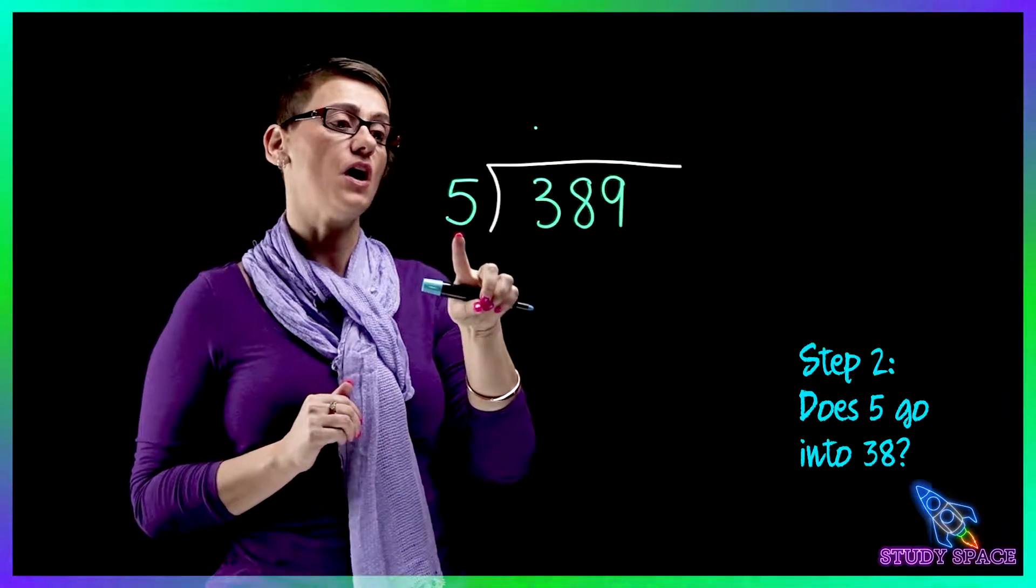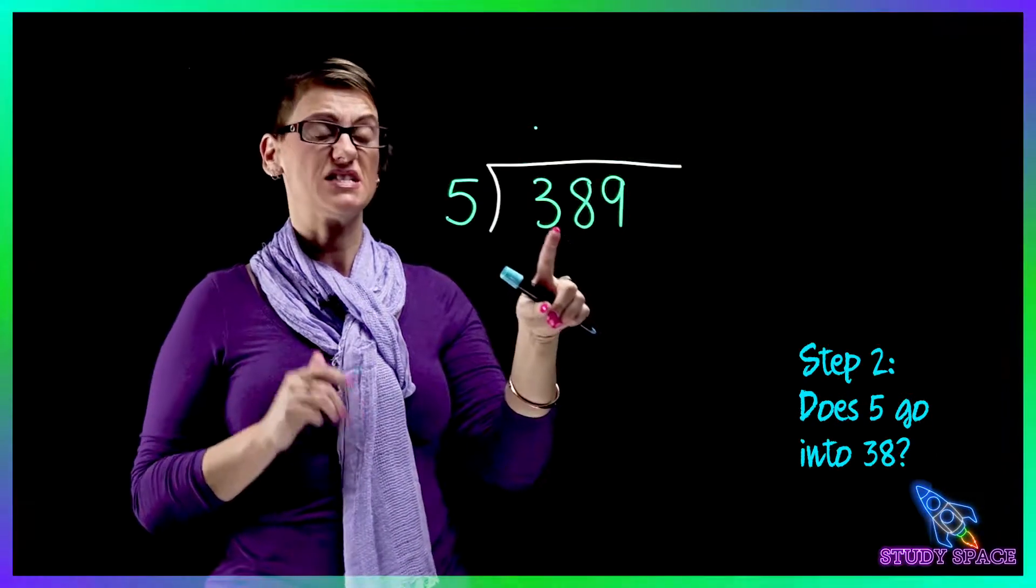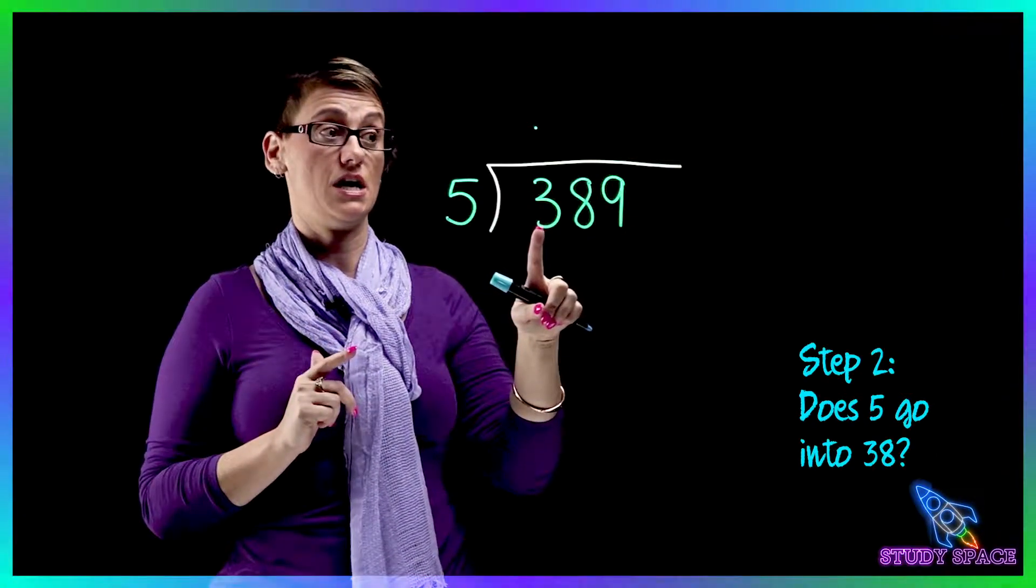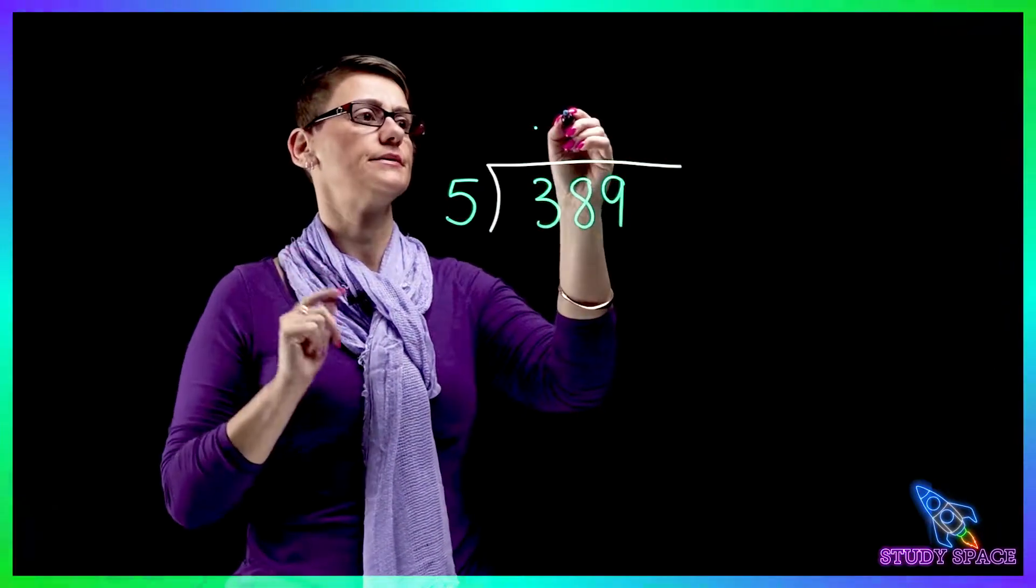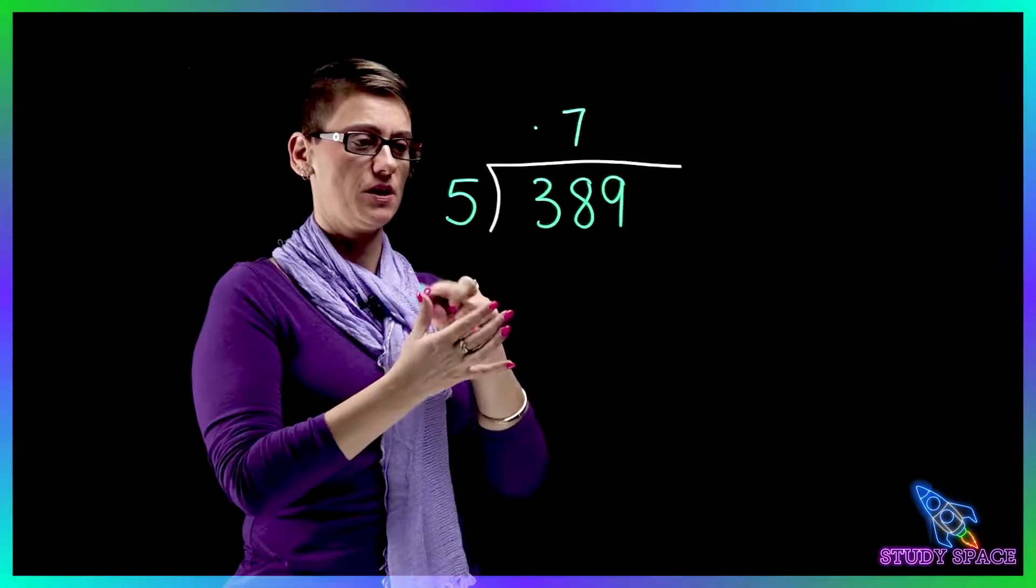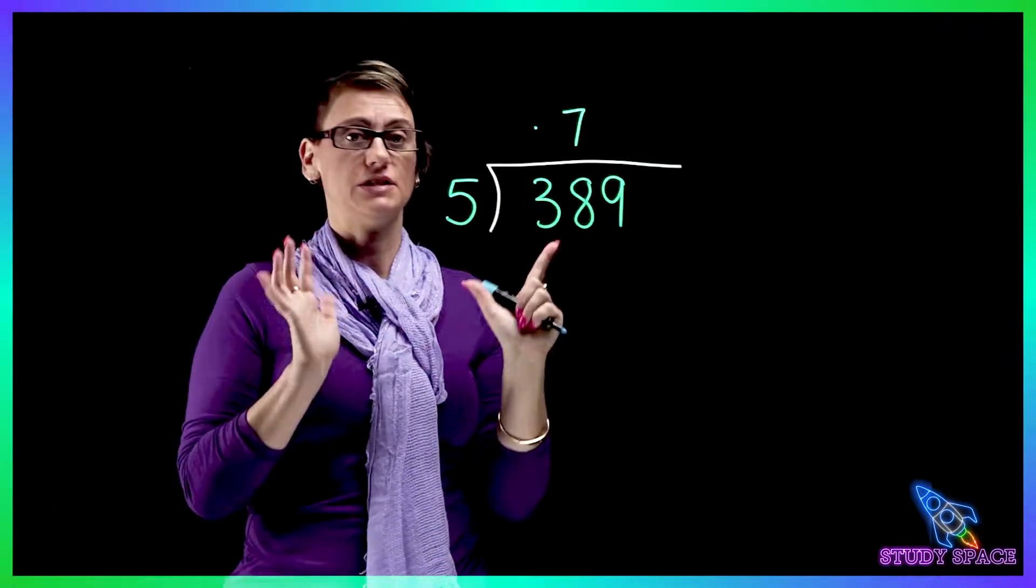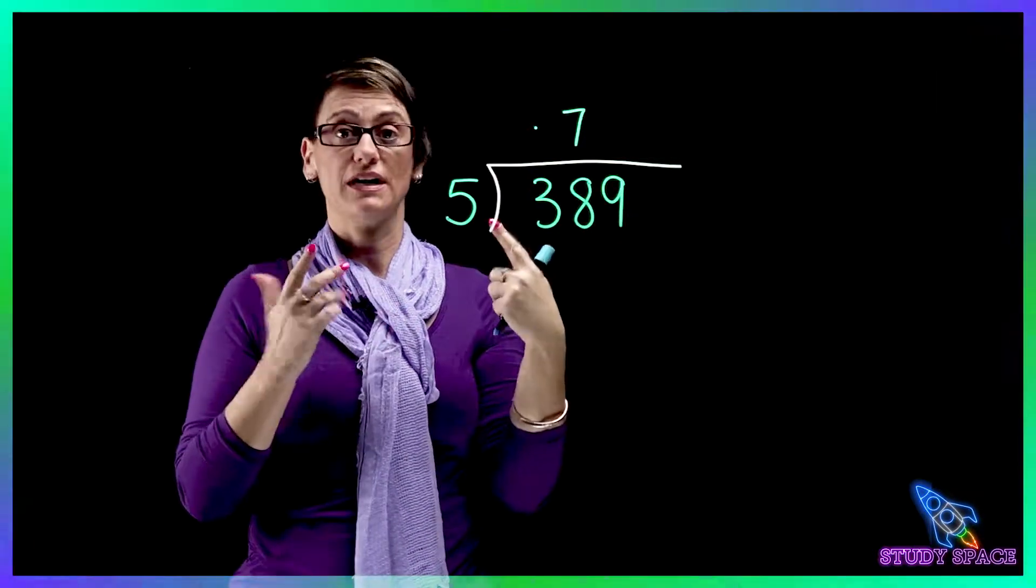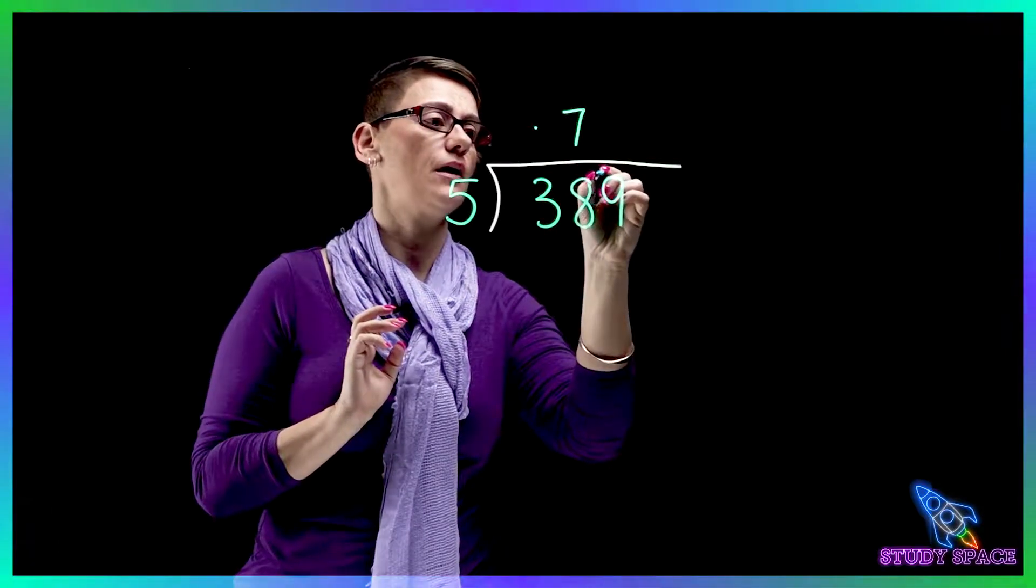Then comes 5 into 38. There are 7 fives in 38. But does it go evenly? Let's check. So 5, 10, 15, 20, 25, 30, 35 doesn't go evenly. So I've got 3 left over. So I carry the 3.